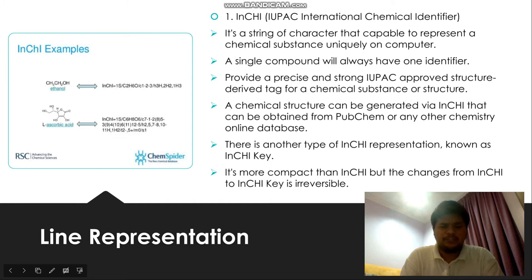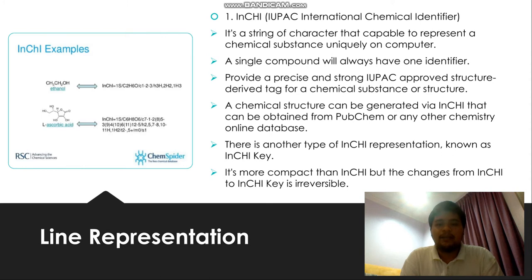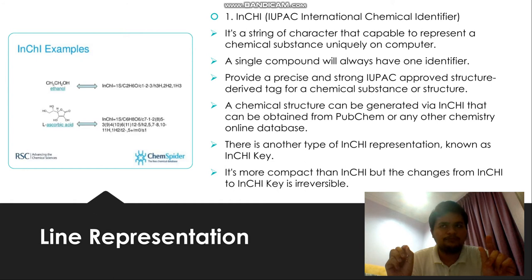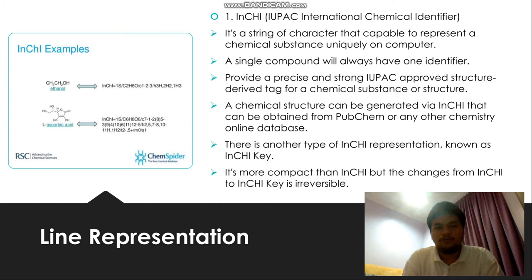For line representation, there are two types: InChI and SMILES. InChI, known as IUPAC International Chemical Identifier, is a string or set of characters capable of representing a chemical substance uniquely. A single compound will always have one identifier — it is like a tag for a compound. InChI provides a precise IUPAC-approved structure tag for a chemical substance, and it can be obtained from PubChem or other chemistry online databases. There is also a more compact version called InChIKey, but the conversion from InChI to InChIKey is irreversible.